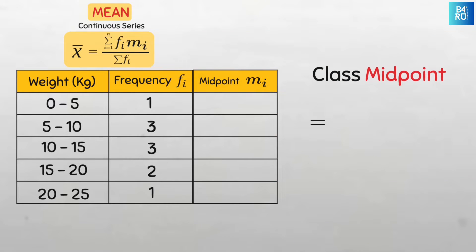To do this, we'll add the lower and the upper class limits of each class and then divide by 2. So for the first class, it will be 0 plus 5 all divided by 2 and that's 2.5.